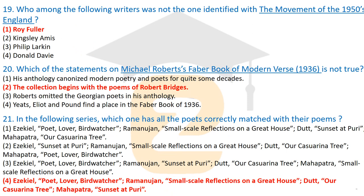Question nineteen: who among the following writers was not identified with 'The Movement' of 1950s England? The correct answer is Roy Fuller — Roy Fuller was not part of The Movement. This was a group of poets from England, and writers from outside Britain were not involved. Key members of The Movement include Philip Larkin and Donald Davie.